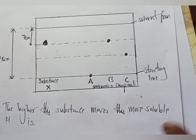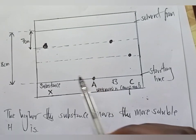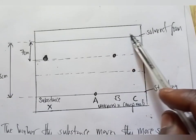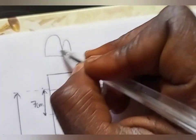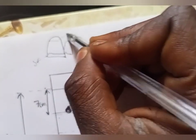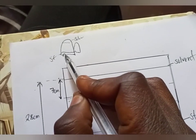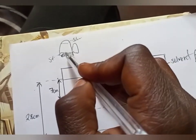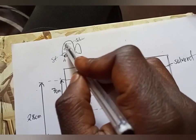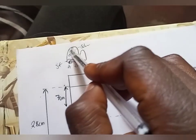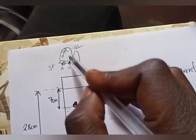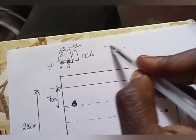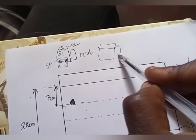When you see something like this on chromatography, this is called a start line and this is called a solvent front. Think of it more like a cup — this is the start line. If you put substances A, B, and C here in the cup, substances that have dissolved will have gone down. If substance B is just at the starting line, it means it did not dissolve — it is insoluble.